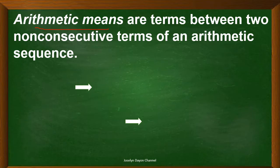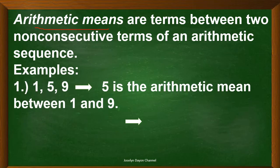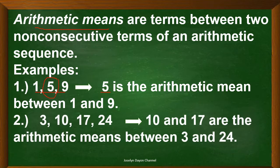Now let's consider the following examples. In the arithmetic sequence 1, 5, 9 — 5 is the arithmetic mean between 1 and 9. In another example, in the arithmetic sequence 3, 10, 17, 24 — 10 and 17 are the arithmetic means between 3 and 24.